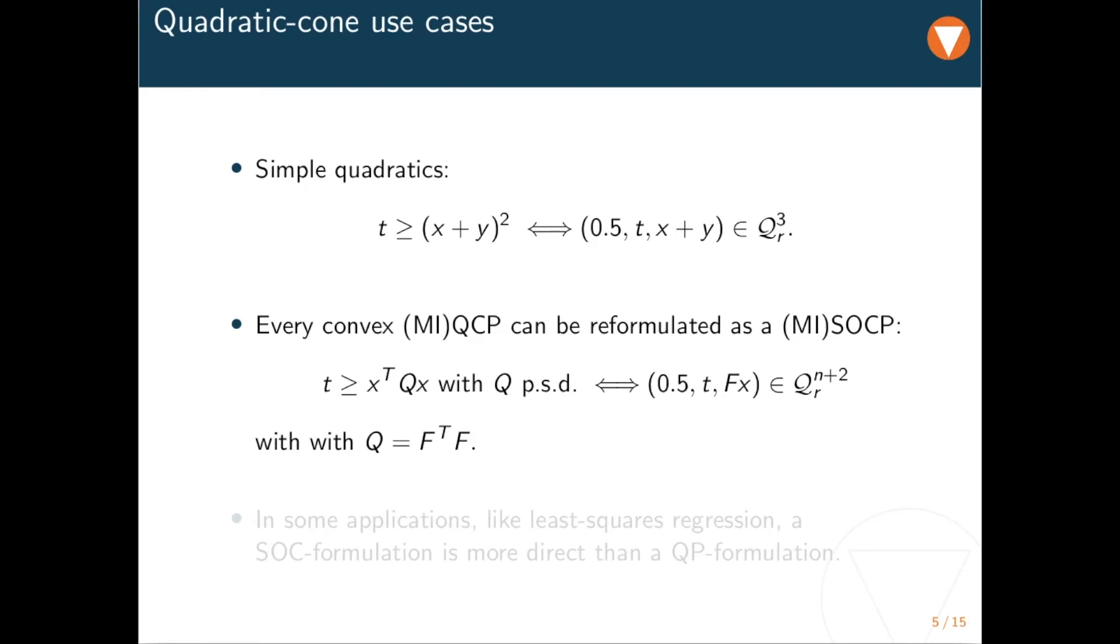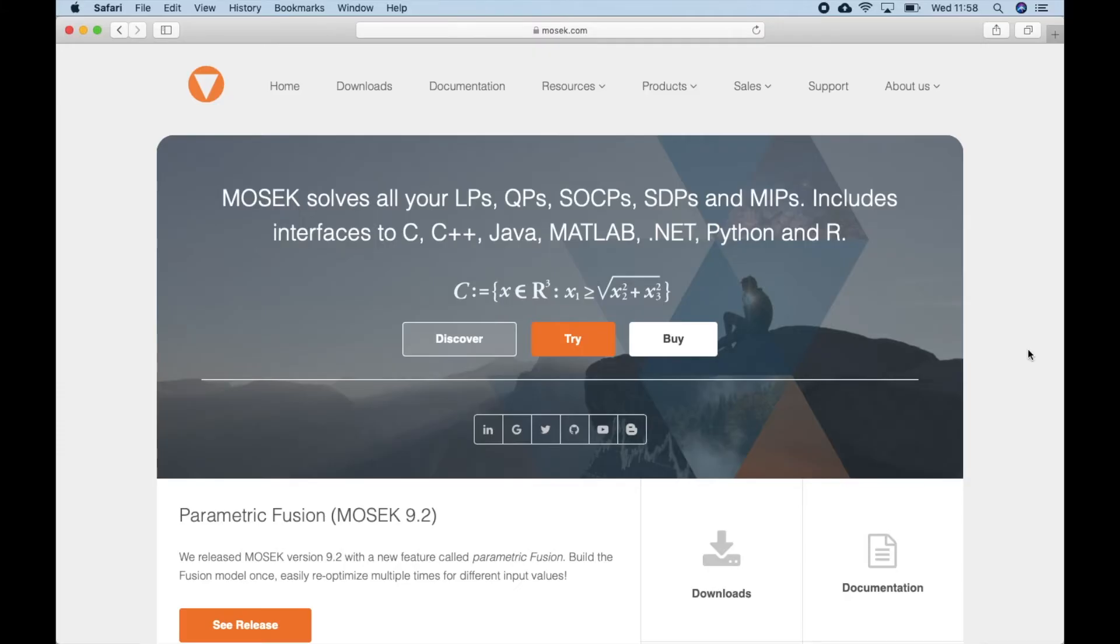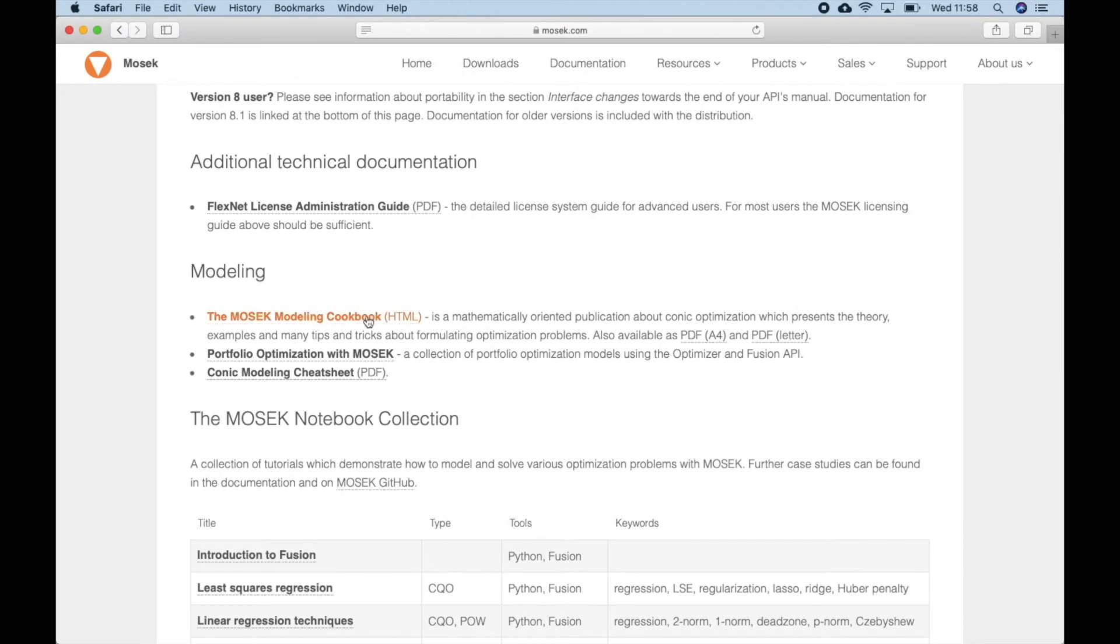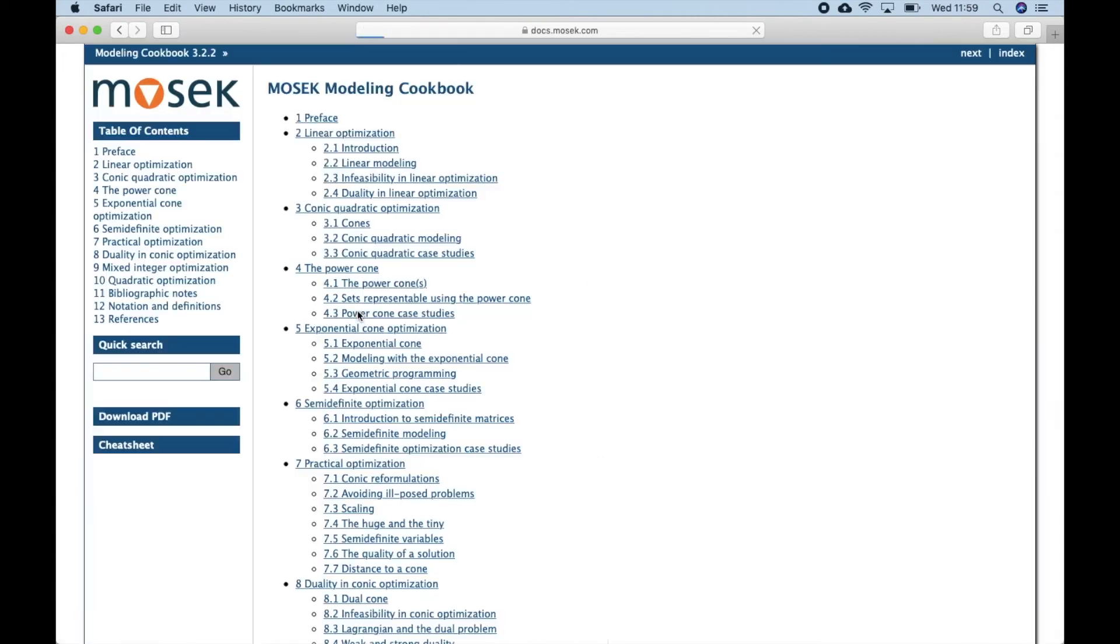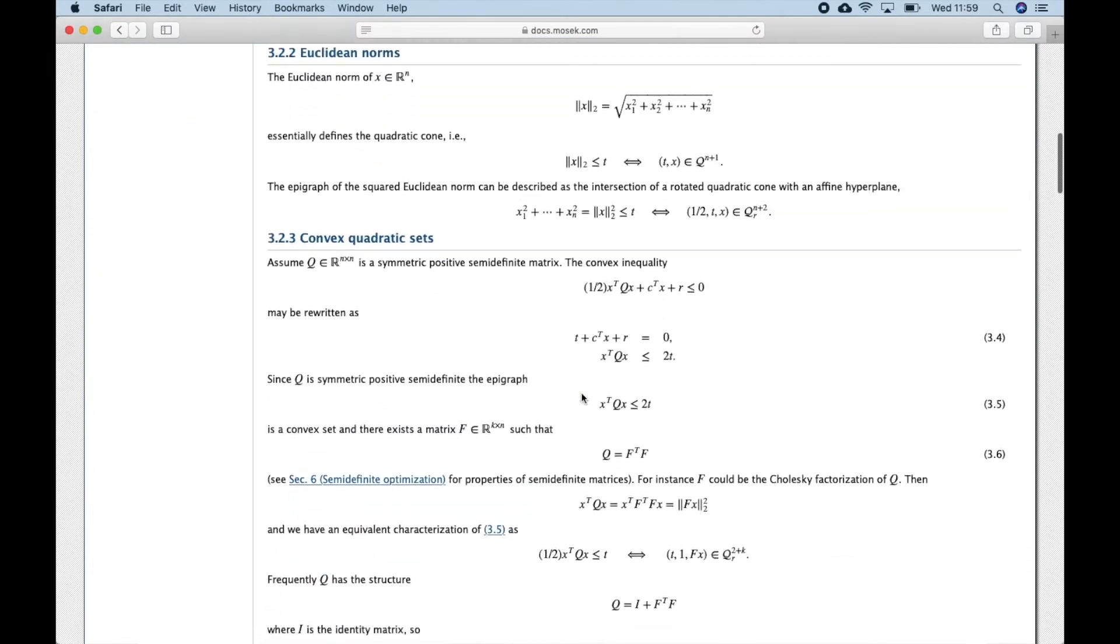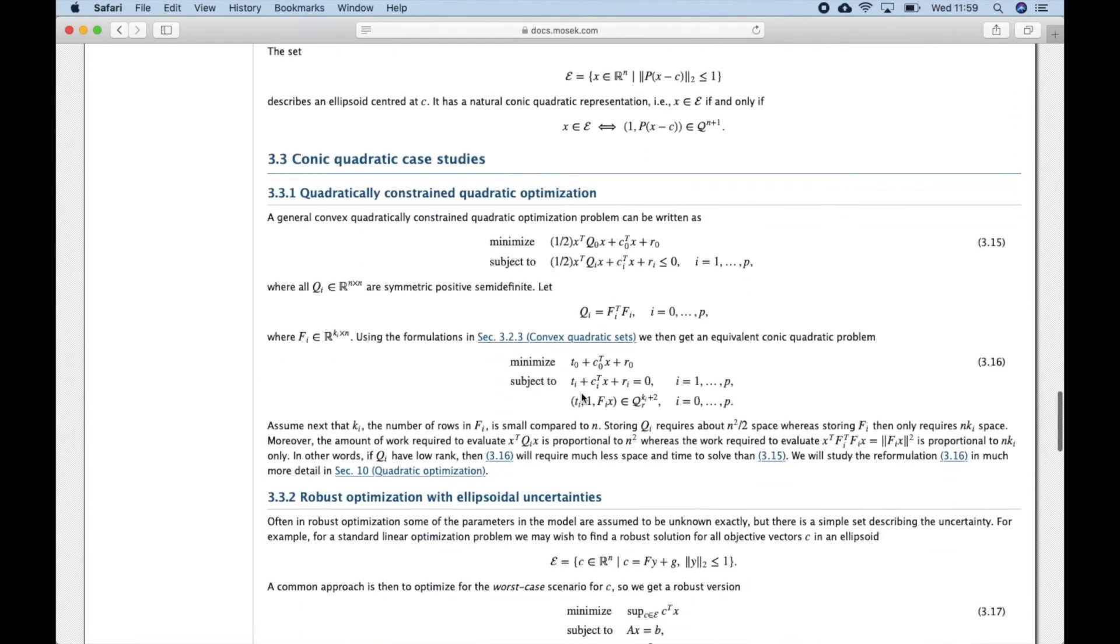Solvers, for example, can perform this factorization for you. In some contexts it can also happen that the matrix F instead of Q is given to the modeler, or that thinking in terms of Euclidean norms is just more natural than thinking in terms of Q matrices. If you want to see some more conic quadratic modeling, and in particular some case studies, take a break and go to our website. In the documentation section you will find our modeling cookbook, an actively maintained guide on conic modeling. You can grab a free digital copy, or browse through the HTML version.